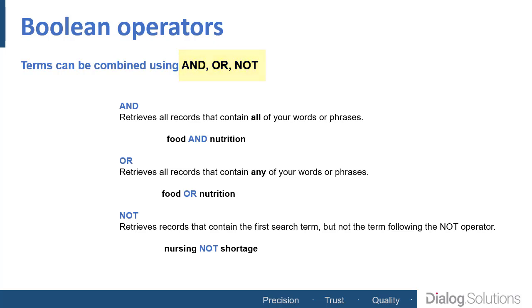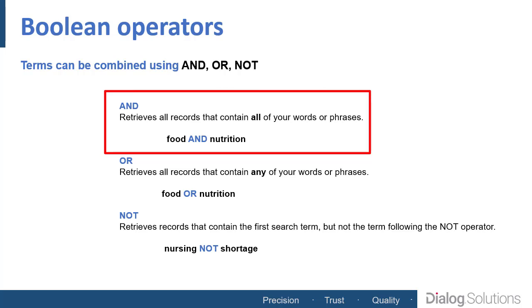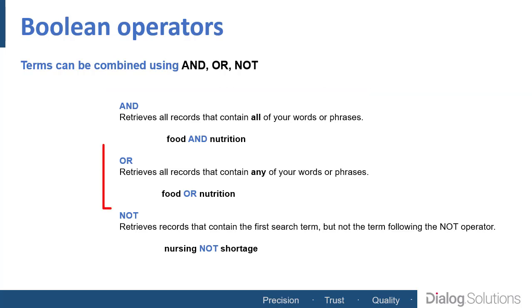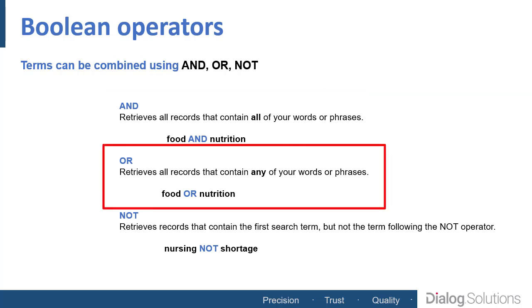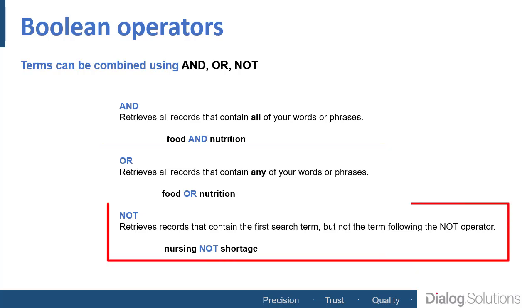If you search for food AND nutrition, you'll only get records that contain both of those terms. If you search for food OR nutrition, you'll get any record that has either one of those terms. You can also use the NOT connector to prevent retrieving records that contain a particular word, so that you can block out a lot of records that you expect will be unwanted, as in this example.